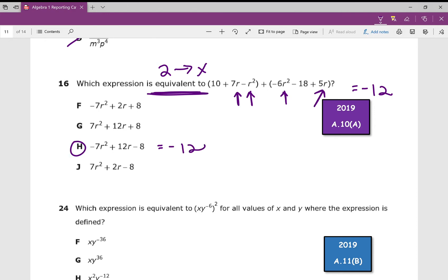You could obviously just combine like terms if you would like to do this without a calculator. Since I'm adding, I don't need to distribute any kind of negative or anything. I can really just drop my parentheses. Negative r² can be combined with negative 6r². You can combine 7r with 5r, and you can combine 10 with negative 18. And you'll get H.